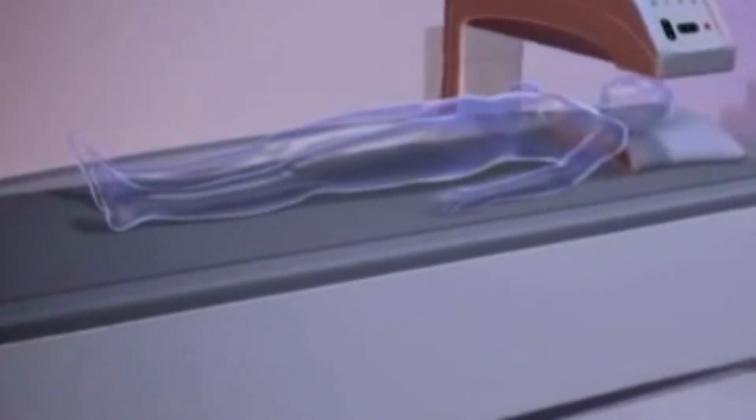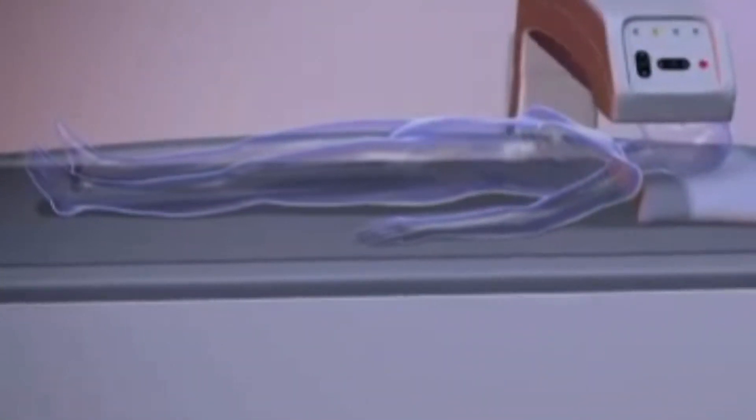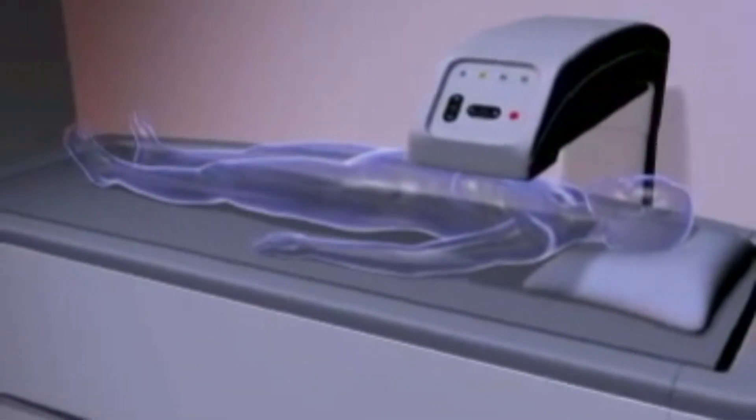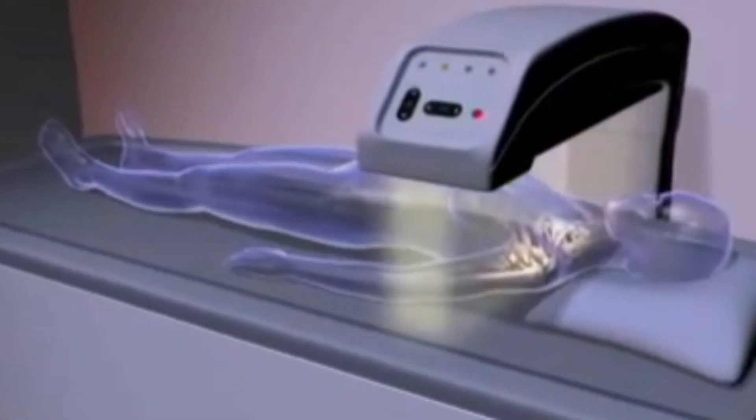What is a DXA scan? A DXA scanner is a machine that produces two x-ray beams, one is high-energy and the other is low-energy. The machine measures the amount of x-rays that pass through the bone from each beam. This will vary depending on how thick the bone is. Based on the difference between the two beams, your doctor can measure your bone density.